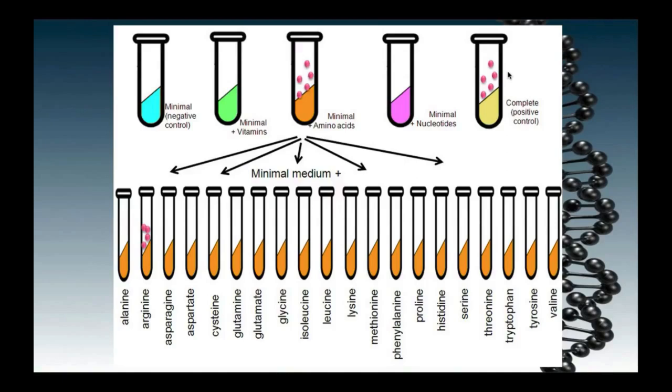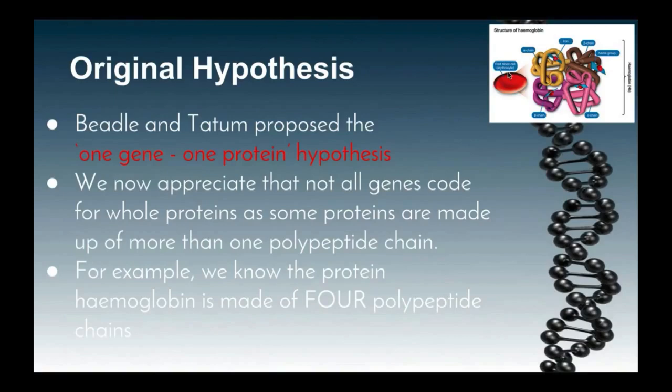When Beadle and Tatum carried out these experiments, there was a minimal understanding of proteins and their makeup. At this time, it was believed that proteins and enzymes were made up of one polypeptide chain. It is for this reason they proposed the one gene, one protein hypothesis, as they saw that the change in one gene in the bread mould resulted in the change in the protein formed.